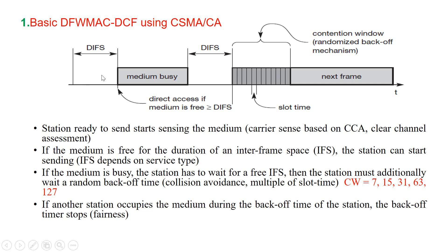If the medium is busy, nodes have to wait for a duration of DIFS and then enter a contention phase. Each node chooses a random back-off time within a contention window and delays medium access for that random amount of time. The node then continuously senses whether the channel is free or not. As soon as the node senses the channel is busy, it pauses its back-off cycle and has to wait for the medium to be idle again for at least DIFS.